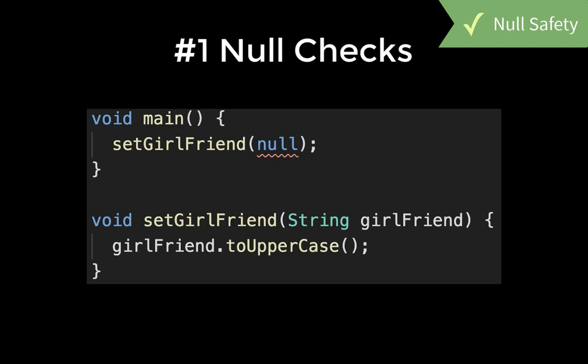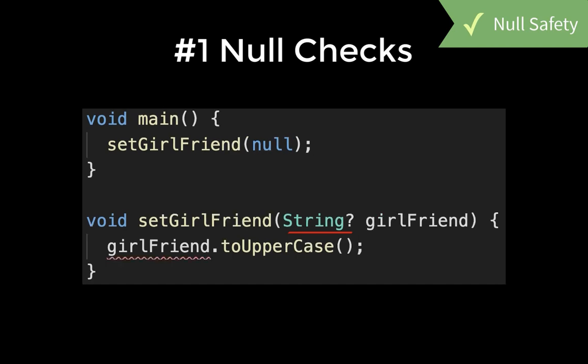Let's look at some real examples. First of all, we have null checks, which mean that Dart helps you to avoid null-related errors. In this case, the type string is not nullable and therefore we cannot put a null value inside. If we want to put a null value inside, then we add a question mark.